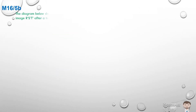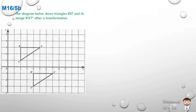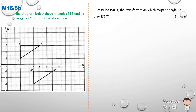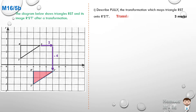May 2016, number 5B. The diagram below shows triangles RST and its image R'S'T' after transformation. The original image is on the top left — that's the object — and R'S'T' is the image. Part one: describe fully the transformation which maps triangle RST onto its image. We can see that it's a slide, a translation. Taking point S: it slides 2 units to the right, shown by a purple arrow, and then comes down 1, 2, 3, 4 units, which is minus four. As such this is a translation of (2, -4), indicating it moved 2 to the right and 4 down.